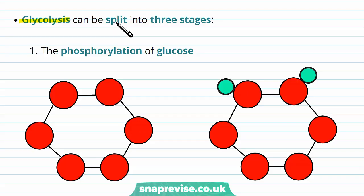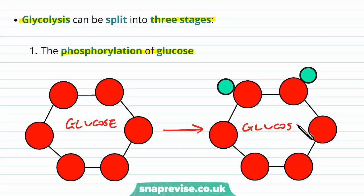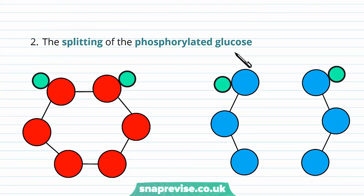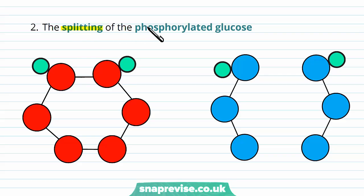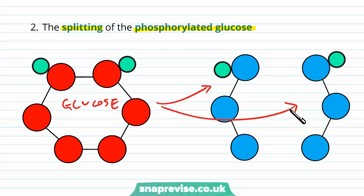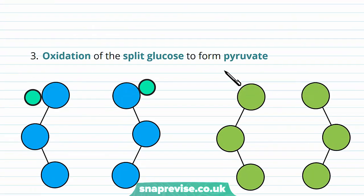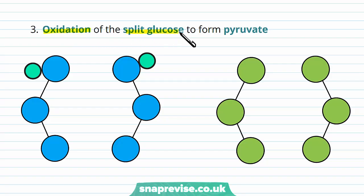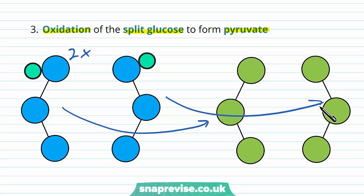The process of glycolysis can be split into three stages. The first part is phosphorylation of glucose — we take our glucose molecule and turn it into a form of glucose that has been phosphorylated, meaning we've added phosphate groups to it. The second part is the splitting of the phosphorylated glucose in half, so it splits into two molecules. The third stage is oxidation of the split glucose molecules to form pyruvate.